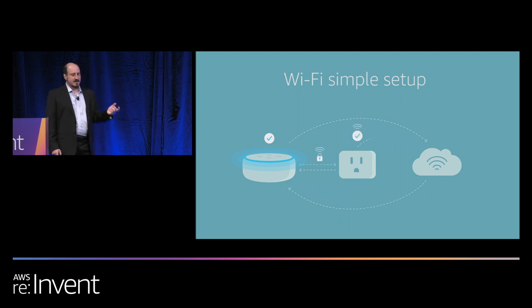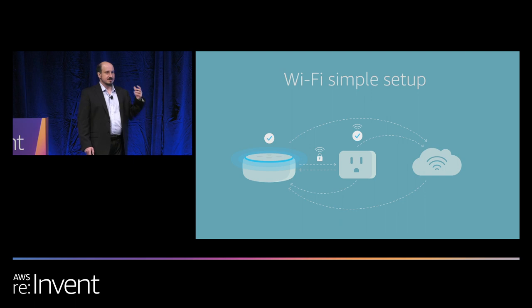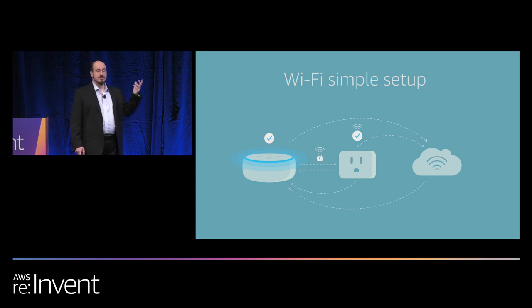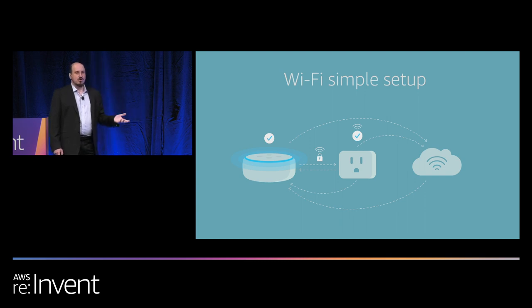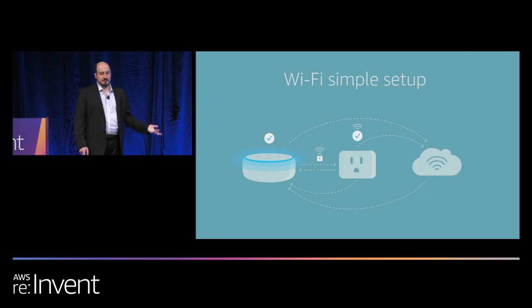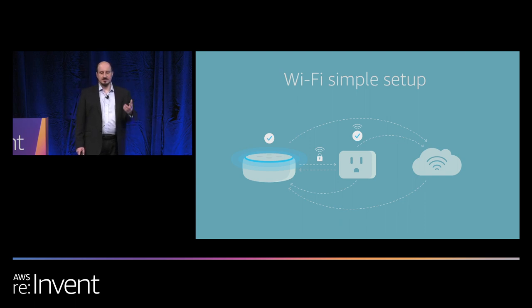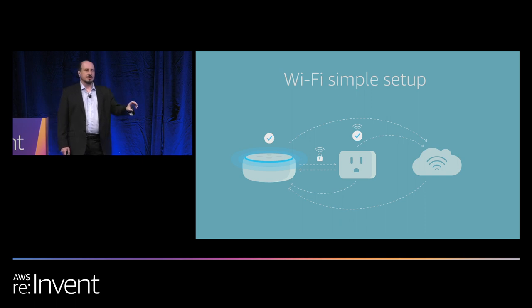The way it works is that devices already on the home Wi-Fi network — such as Echos or other devices that support Wi-Fi Simple Setup provisioning — can help onboard new devices purchased on Amazon.com with literally no user interaction. If the device was purchased somewhere else, or the user didn't opt into this feature, they can still easily onboard the device by using the Alexa app and scanning the 2D barcode sticker printed on the device.